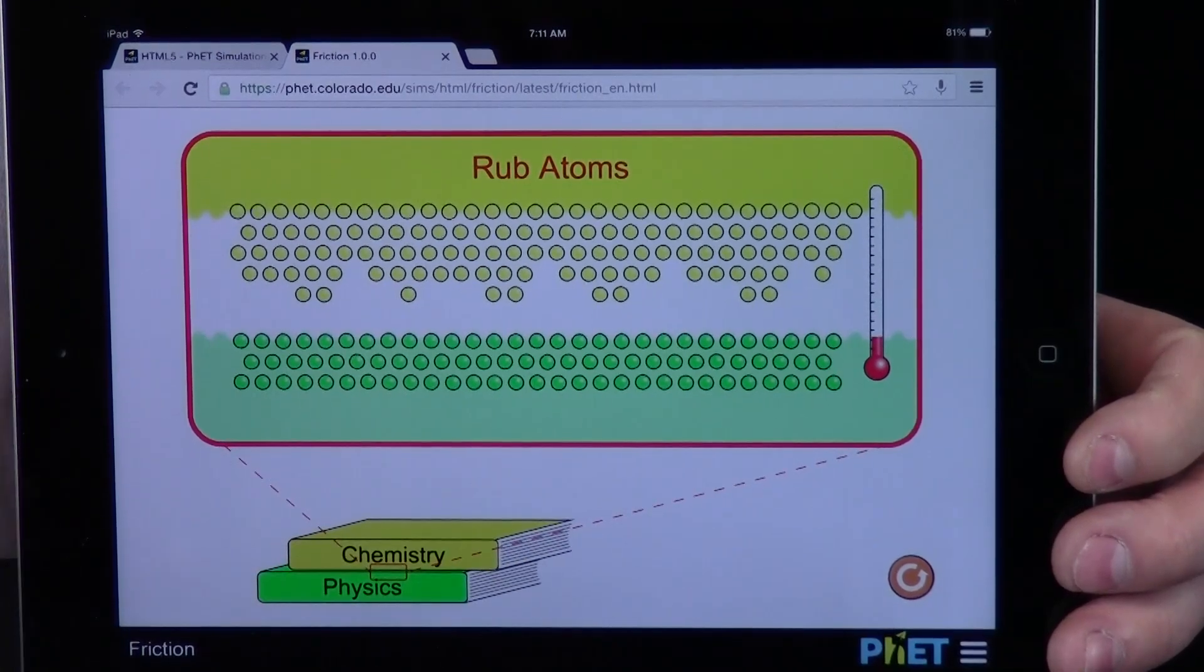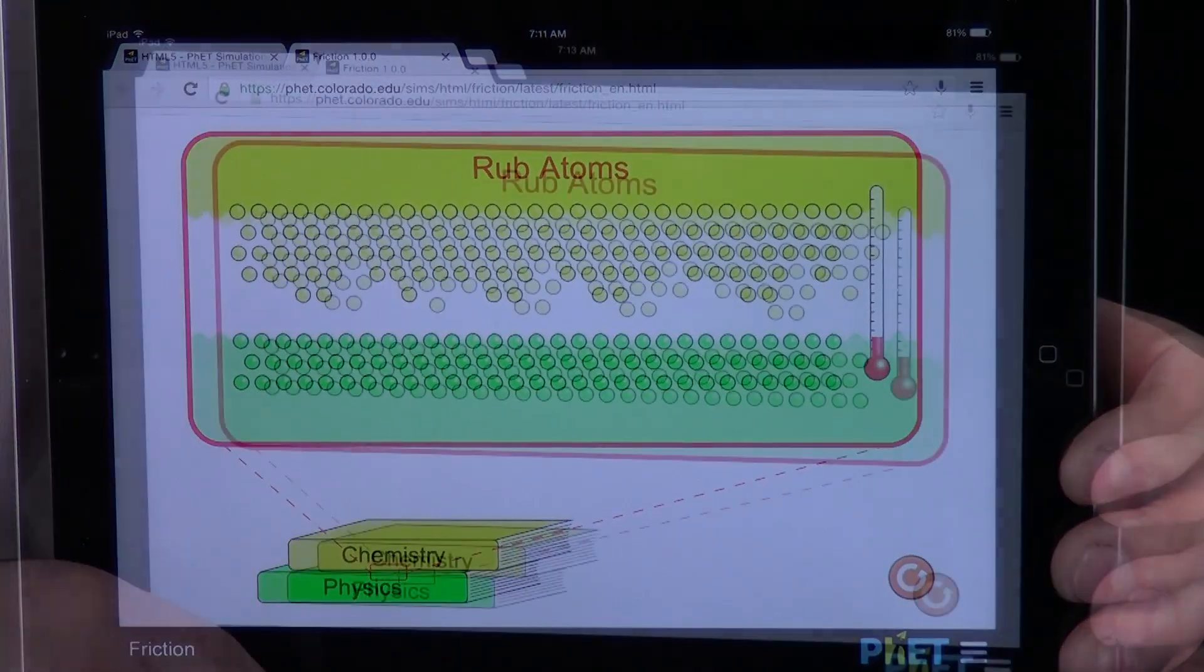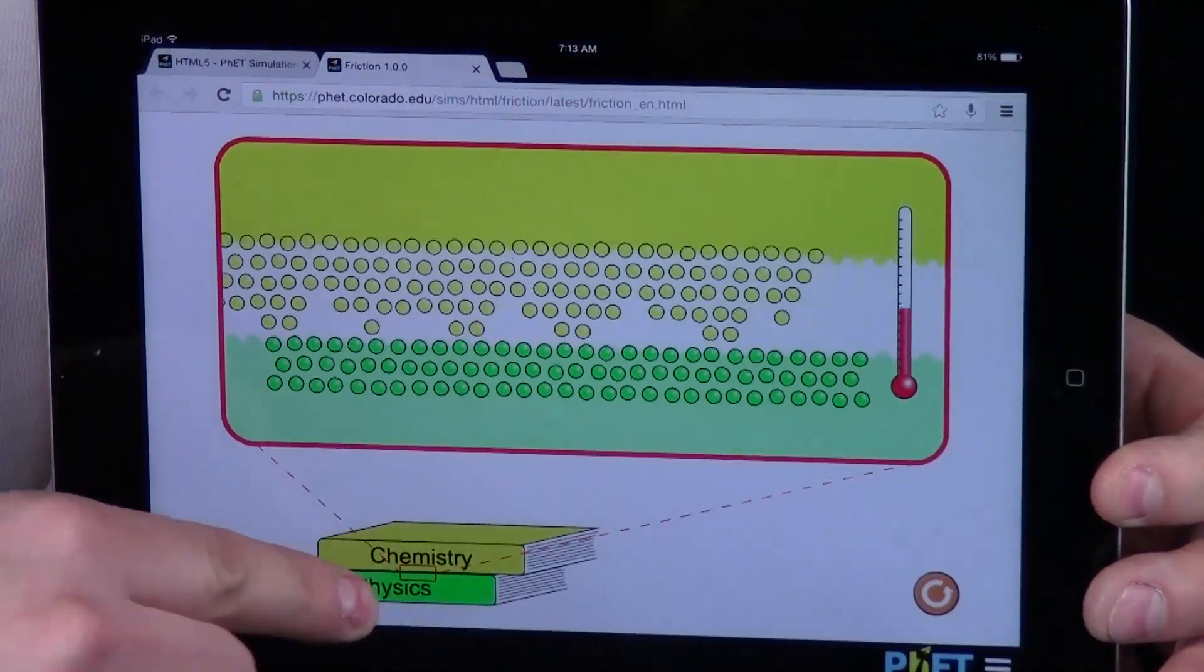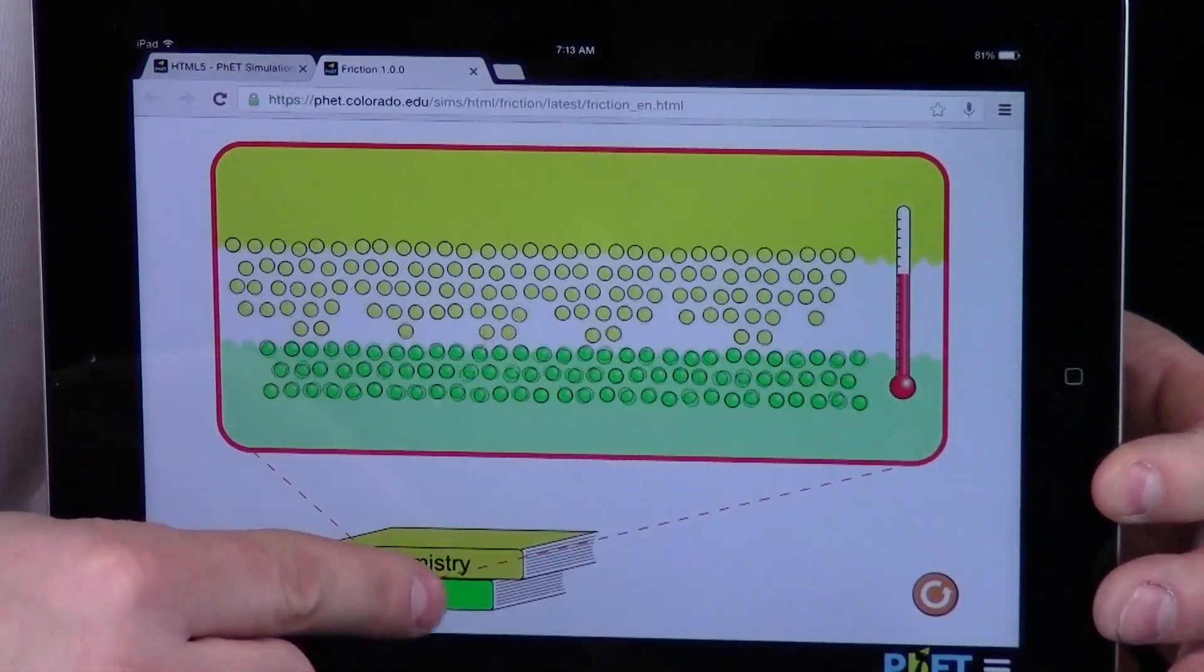So, now we can actually move things around and see what is going to happen. So, watch what happens when I rub these two books together. The particles move faster. But look at that thermometer over here. The temperature is going up.